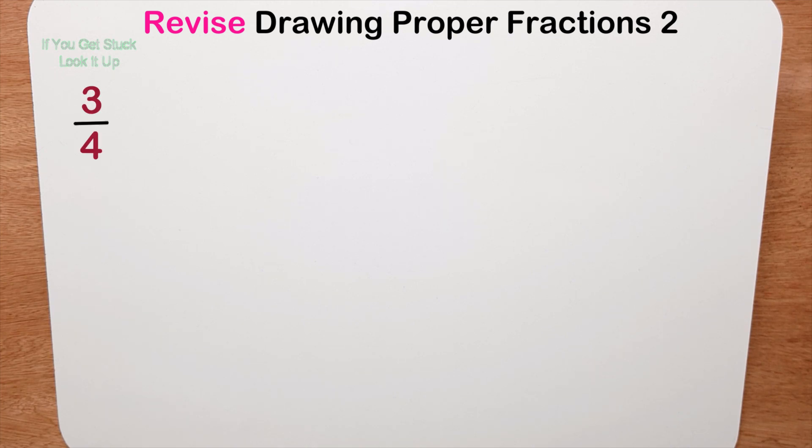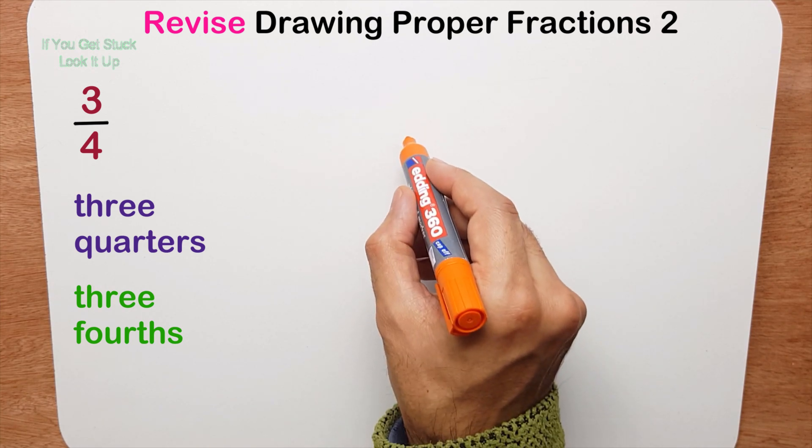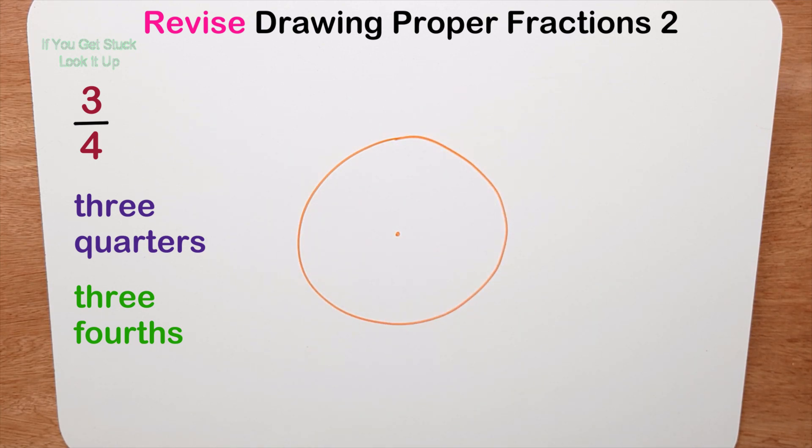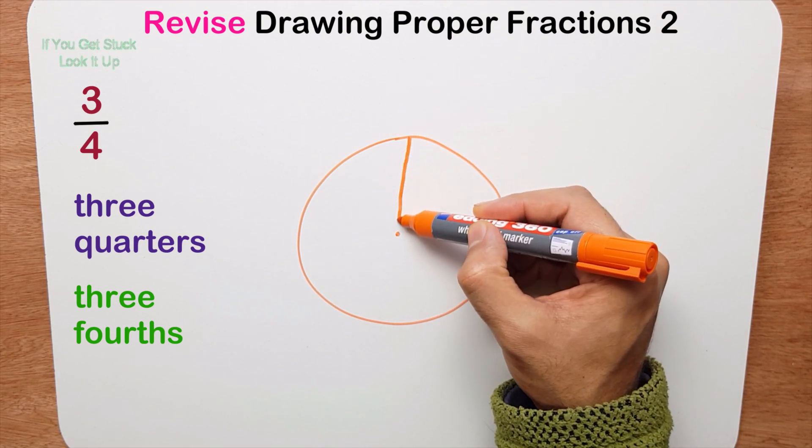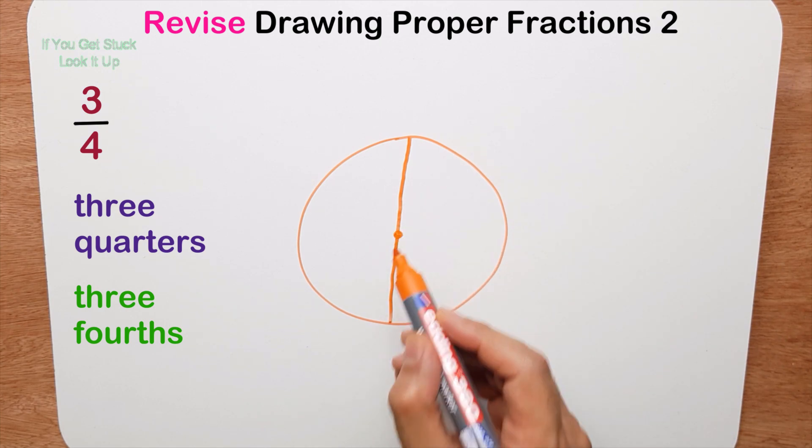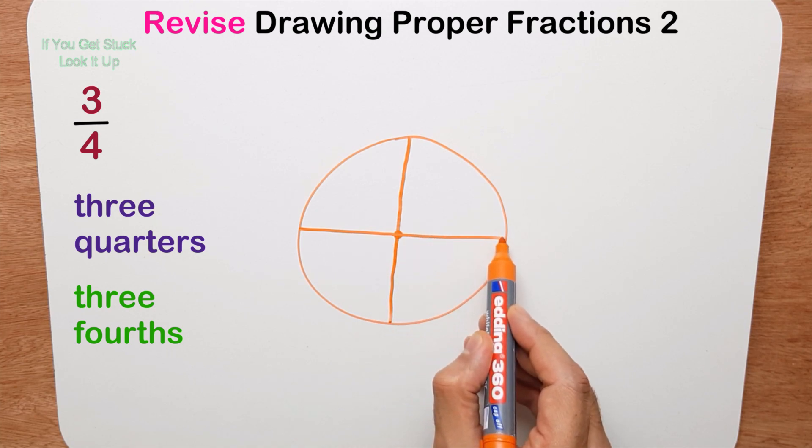The first fraction we're going to look at is 3 quarters. Sometimes you'll hear people say 3 fourths. I'm going to use the pizza model to draw the fraction. So here's my pizza and there's a centre. So remember what we said about drawing quarters. You halve it and you halve it again. So I'm going to draw lines straight down through the middle and I'm going to halve it again.